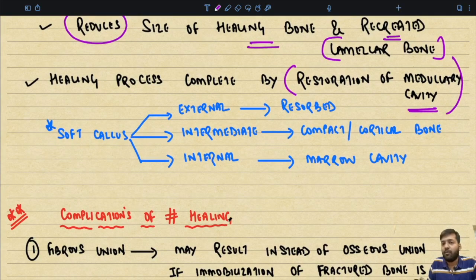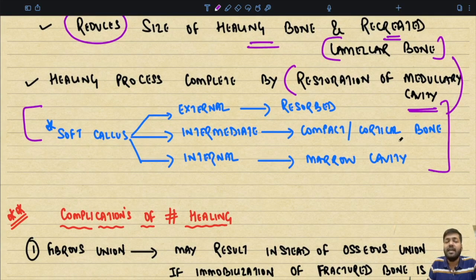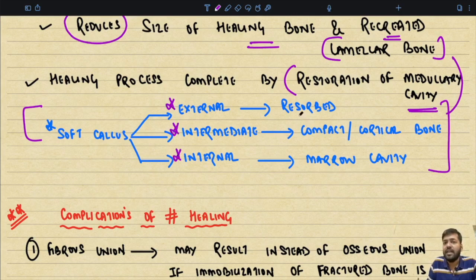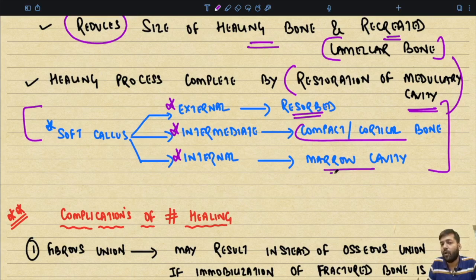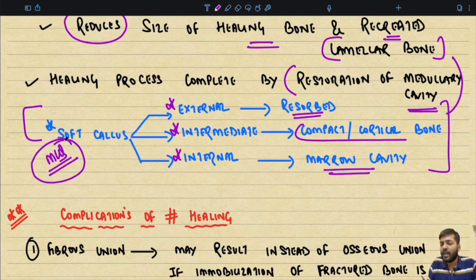One additional point: the soft tissue callus is formed at three parts. The external soft callus is completely resolved. The intermediate soft callus gives rise to compact or cortical bone. The internal callus forms the marrow cavity. This is useful for answering certain MCQ-type questions.